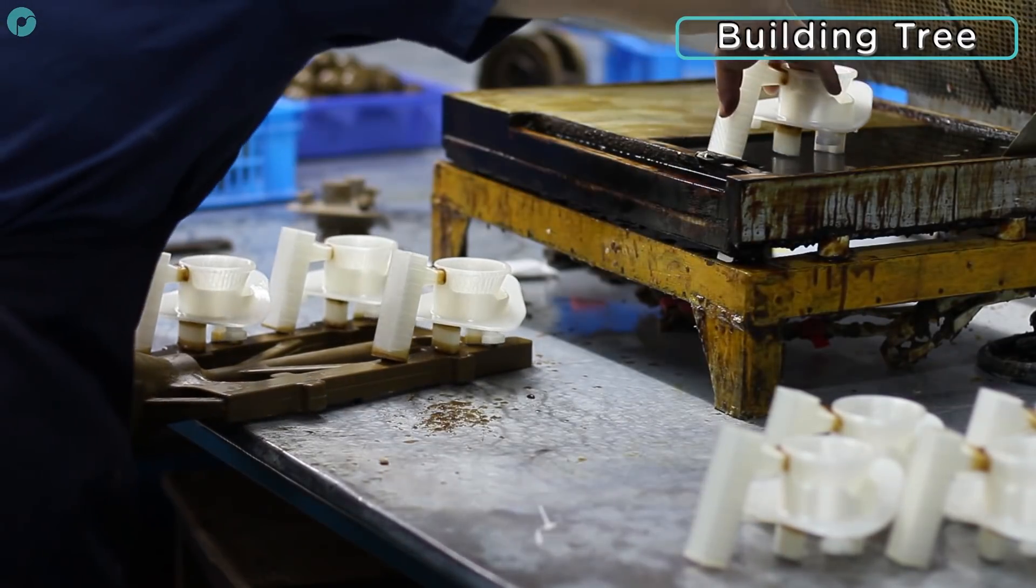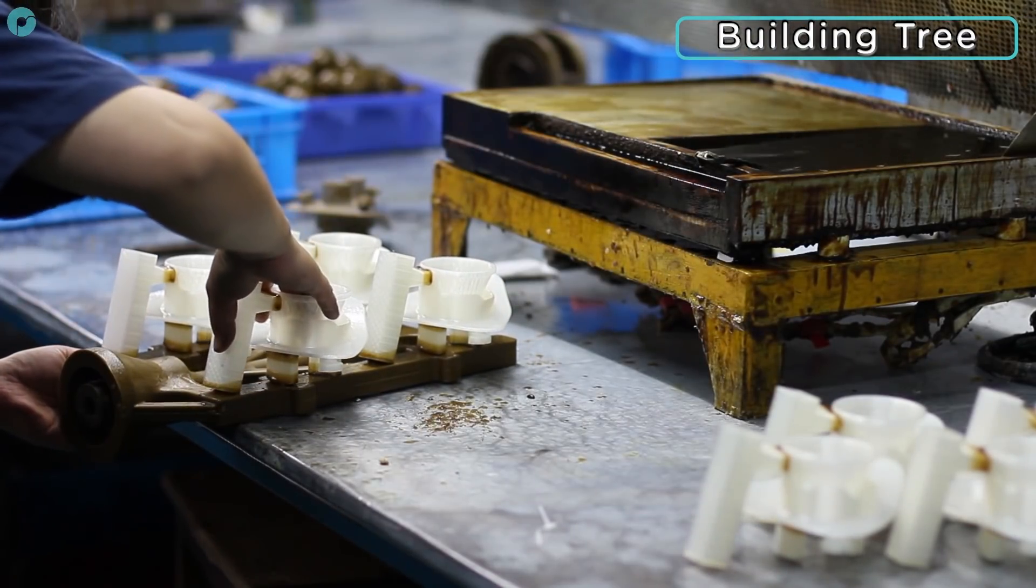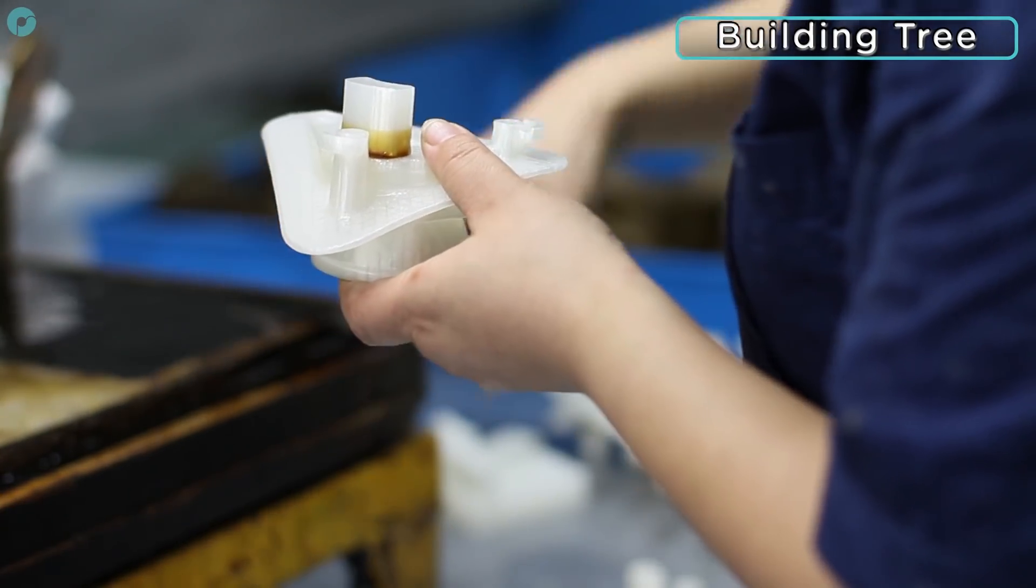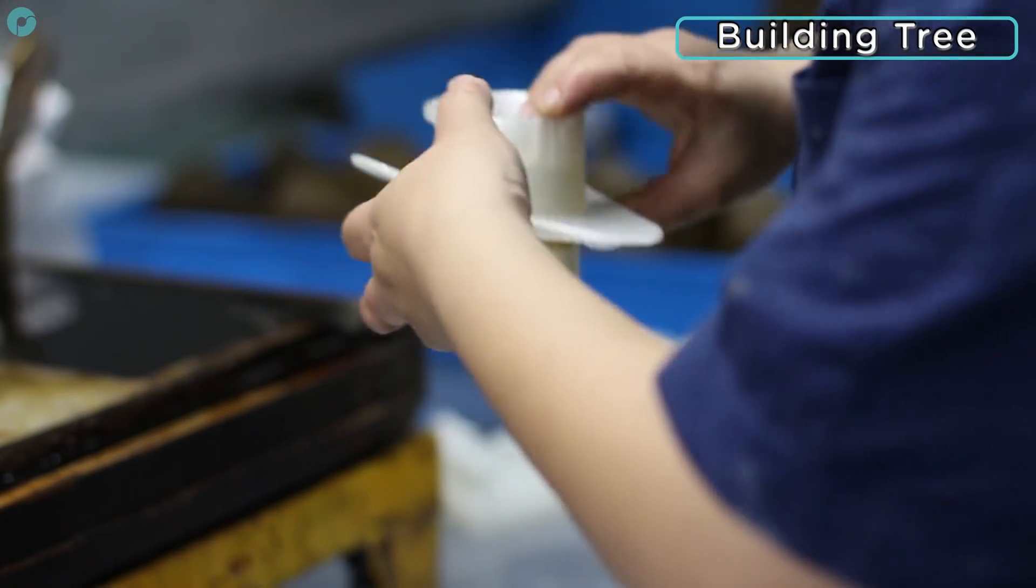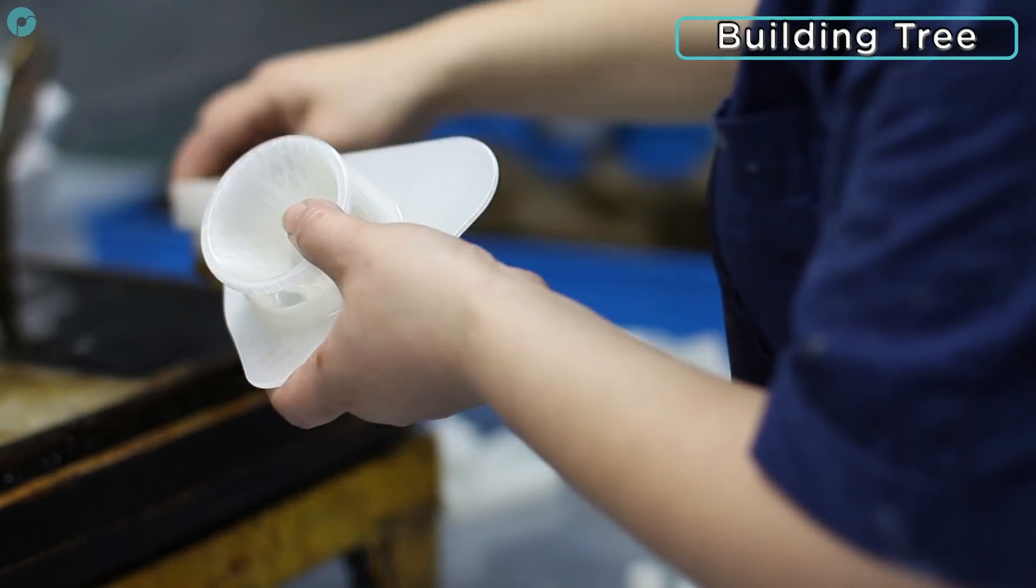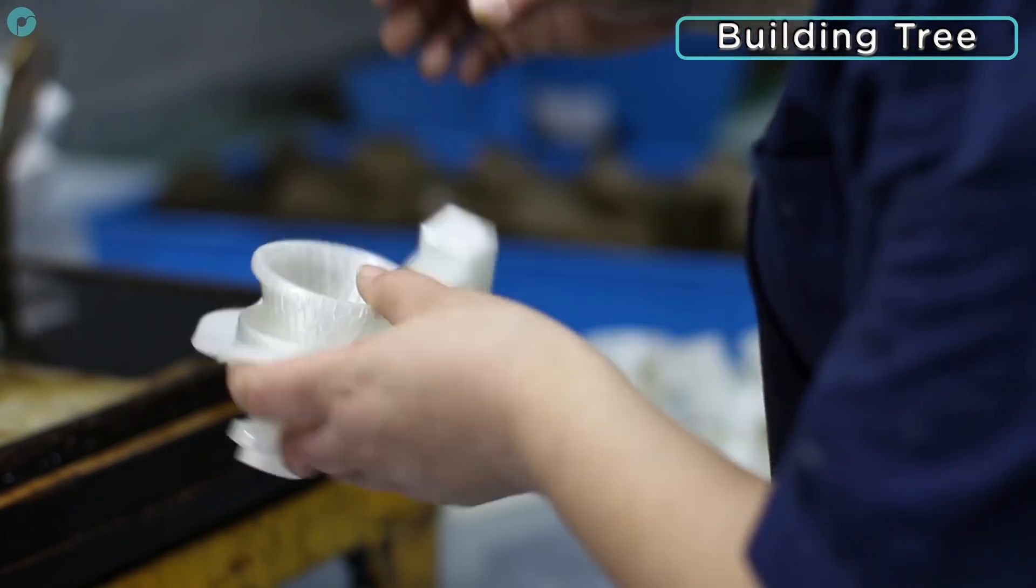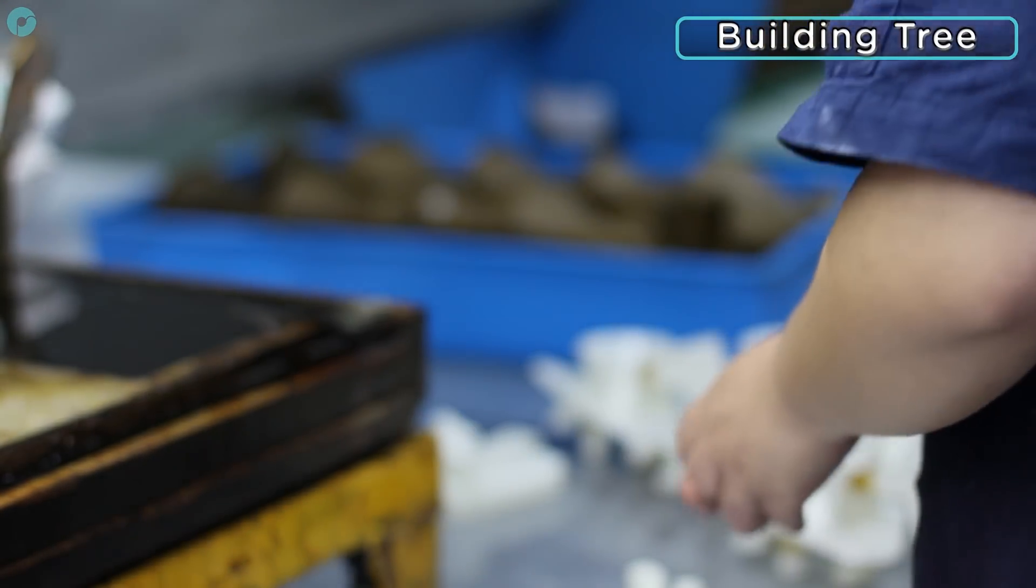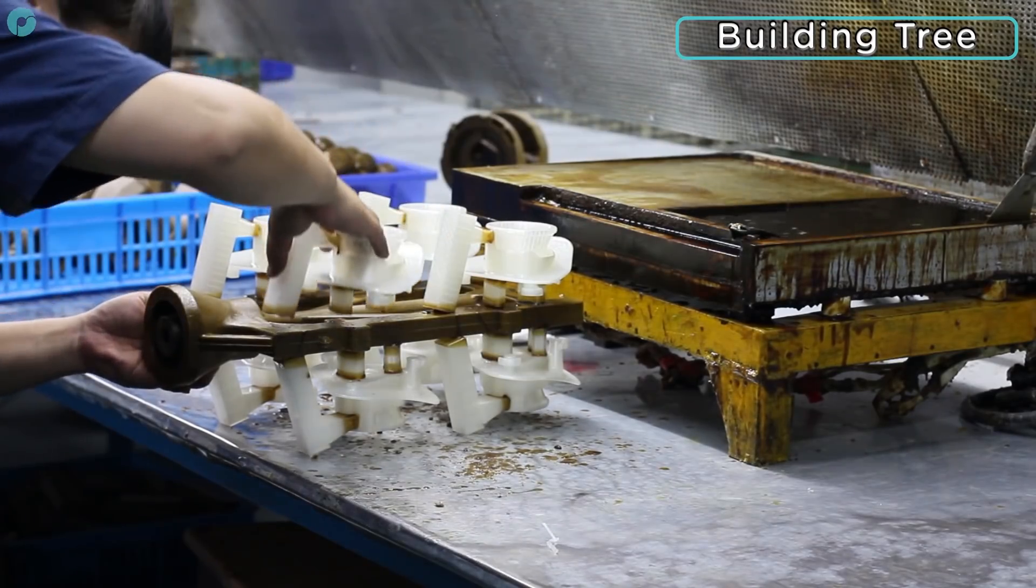Once the parts are printed and polished, they can be assembled onto a wax tree in preparation for molding. Some additional shapes are added as a passage to direct the molten metal into the mold. These are called sprues. Other shapes are attached to the 3D printed parts to prevent cavities due to shrinkage. These are called risers.